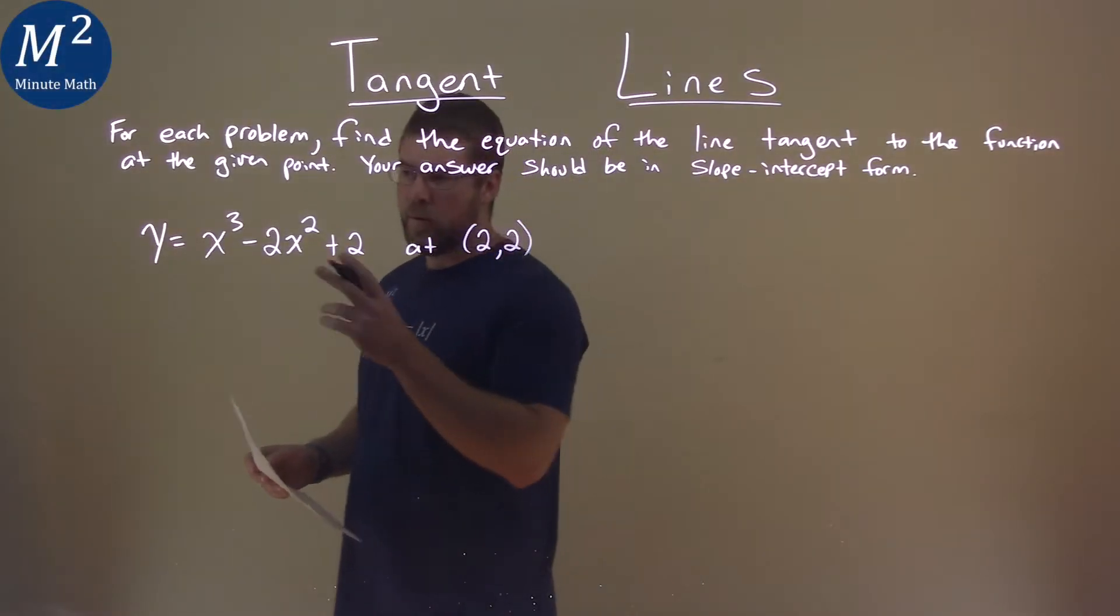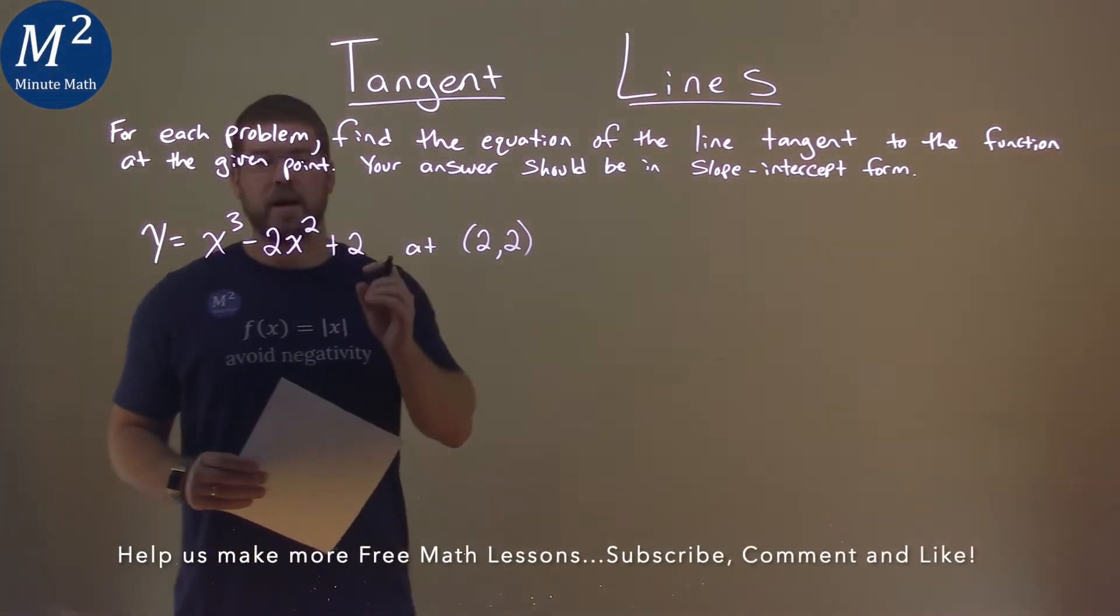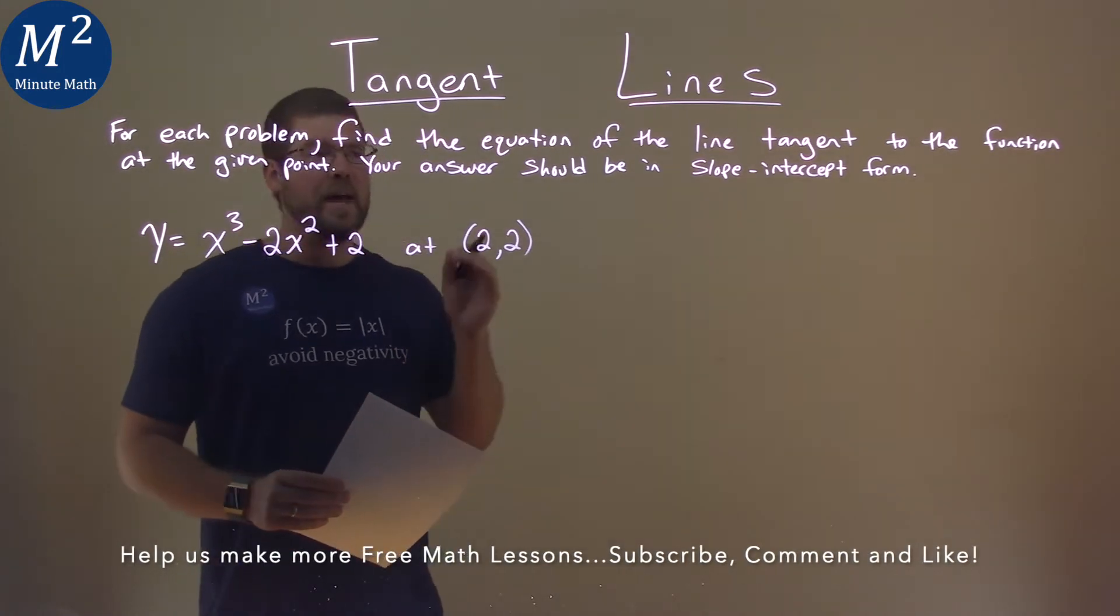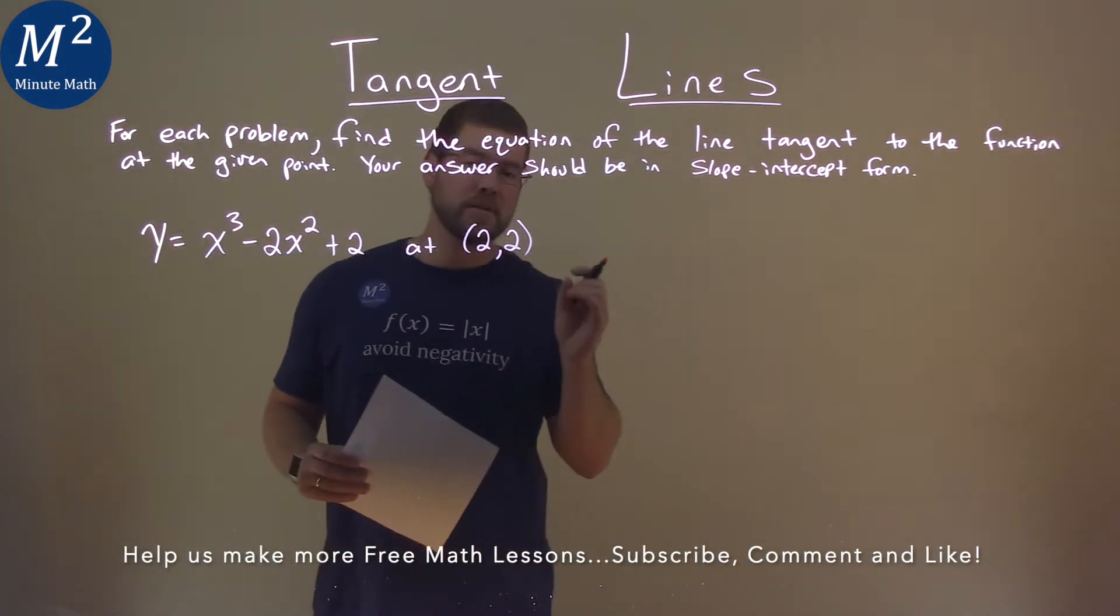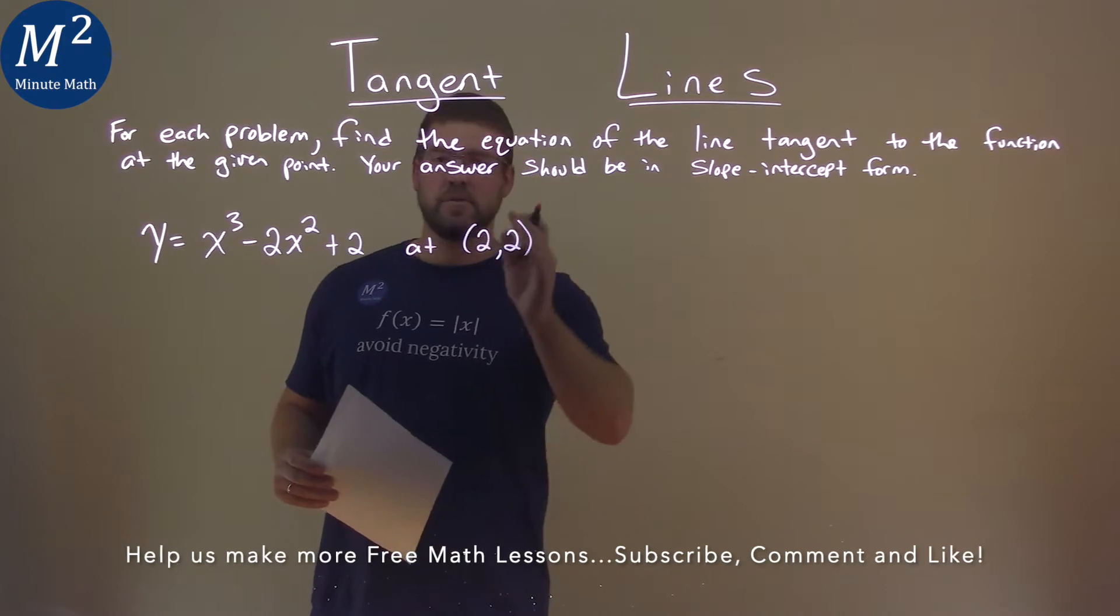We're given this problem right here: y equals x to the third power minus 2x squared plus 2. And we want to find the equation of the line tangent to the function at 2 comma 2.